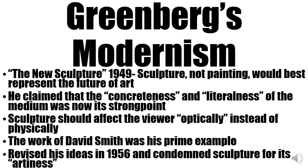Our readings this week begin with a recap of Greenberg's ideas of modernism from his 1949 article, The New Sculpture, in which he states that sculpture, not painting, would best represent the future of art. He claimed that the concreteness and literalness of the medium that had once been its weakness was now its strong point. He asserted that sculpture would affect the viewer optically instead of physically and used David Smith as his prime example. Later on, in 1956, he revised his ideas and condemned sculpture for its artiness.